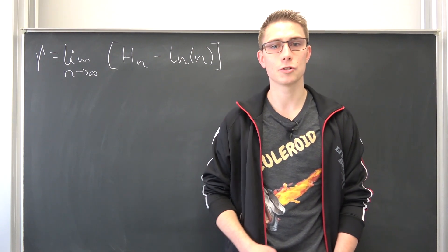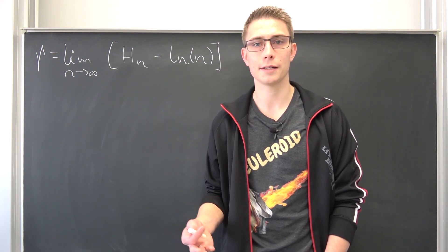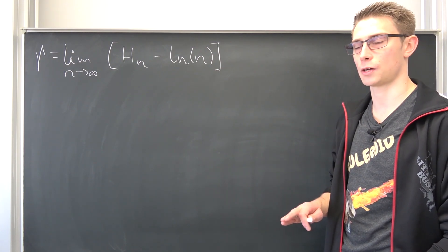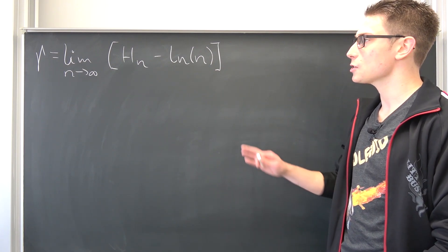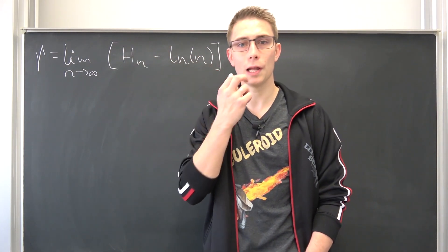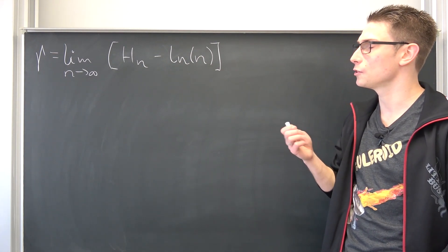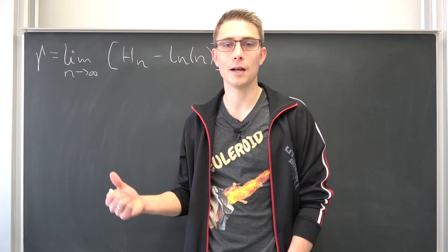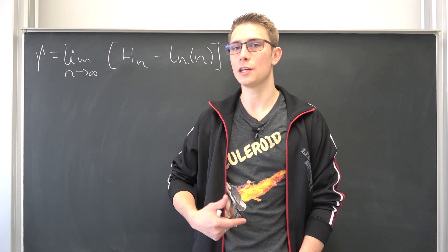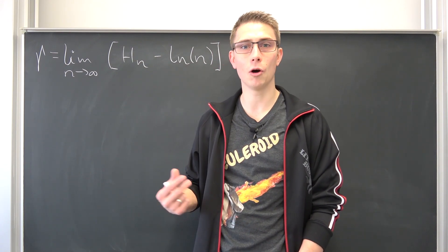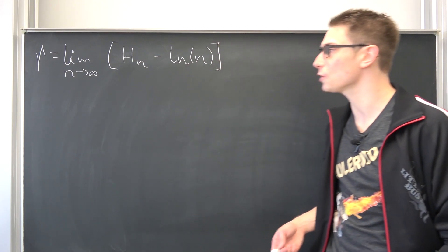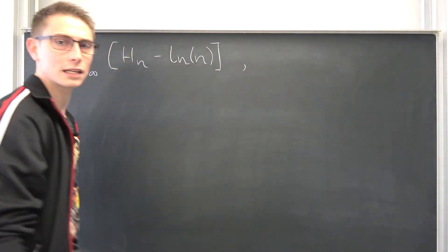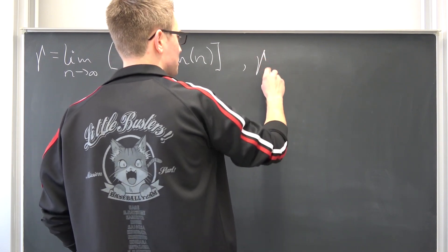We are going to dive right in. First, I would like to introduce the generalized Euler constants. They come quite naturally — they are just a generalization of the Euler-Mascheroni constant. You know, it's basically then going to be oily spaghetti, oily tortelloni, tortellini, oily pasta in general, oily noodles. We are going to derive the oily noodles today. We are going to take a look at the generalized Euler constants.